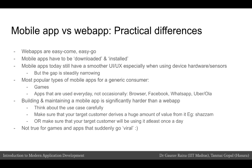This has business implications. Mobile apps today have a smoother UI and UX, especially because they are able to use device hardware and sensors. But the gap between the experience of a mobile app and a web app is steadily narrowing as mobile browsers become much better. The most popular types of mobile apps for consumers are games or apps that are used every day — not apps that are used occasionally. For example, the web browser, Facebook, WhatsApp, and apps like Uber and Ola are used very frequently and are popular candidates for mobile apps.